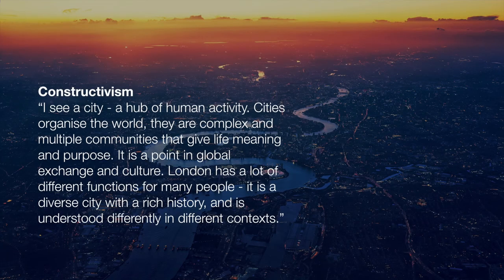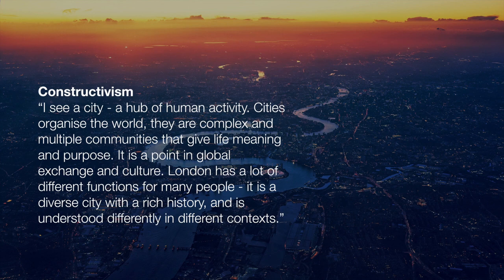A constructivist would still see a physical city, but they'd also see dimensions that are mediated by human activity. Cities organise the world — they're complex with multiple communities that give life meaning and purpose. They might see London as a point in global exchange in culture. London has many different functions for many different people, and it's a diverse city with a rich history, understood differently in different contexts. The way people see London varies by their local community, and within London itself there are many local communities.